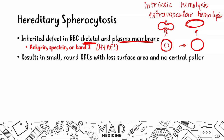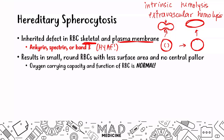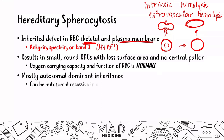One thing to remember is that the oxygen carrying capacity and the function of the red blood cell is going to be completely normal — there's nothing actually happening with the hemoglobin, it's more to do with the plasma membrane. This is going to be an autosomal dominant inheritance most of the time, though it can be autosomal recessive. The defective proteins involved are ankyrin, spectrin, and band 3.